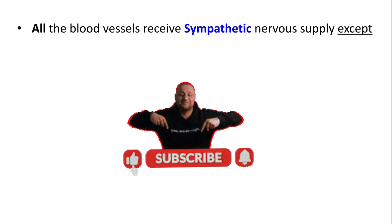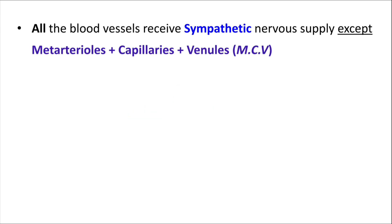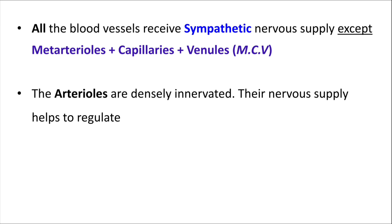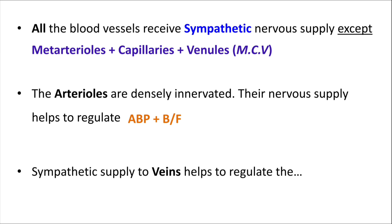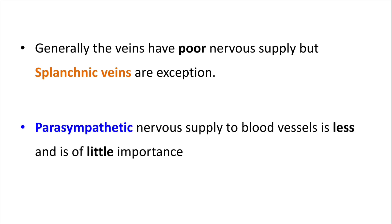There are important points regarding innervation of blood vessels. All blood vessels receive sympathetic nervous supply except three: metaarterioles, capillaries, and venules. Arterioles are richly supplied by sympathetic nerves, which helps regulate blood pressure and blood flow. Veins also have sympathetic supply, regulating the volume of blood stored — 64% of blood is stored in veins, which is why they are called reservoir vessels. Splanchnic veins are an exception with rich sympathetic supply. Parasympathetic supply to blood vessels is very little and of minor importance.